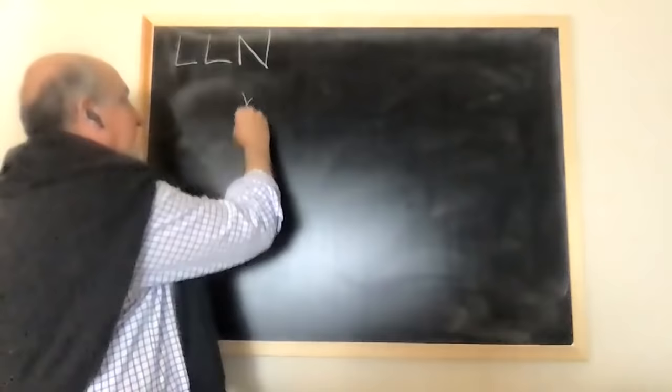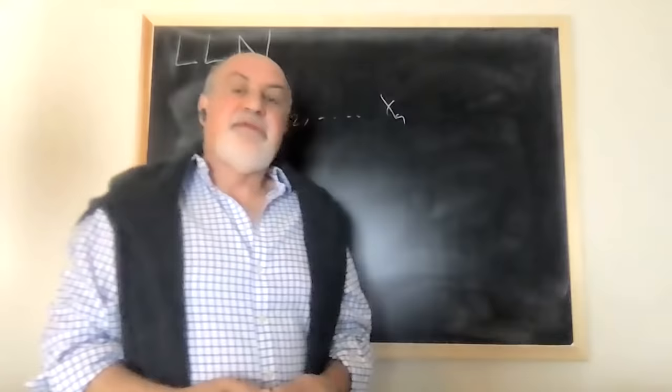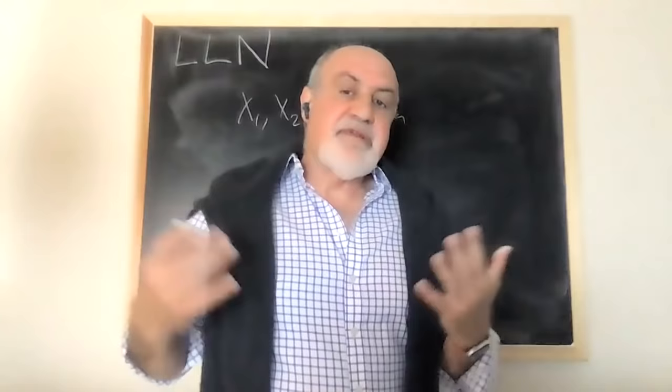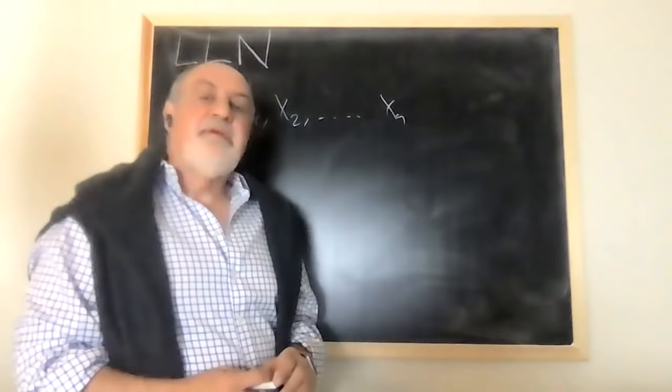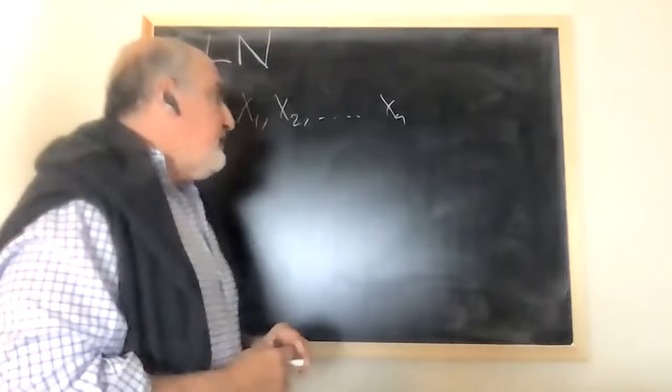So what is the law of large numbers? Very simple. It tells you that when you have observations x1, x2, and to simplify, let's assume that they come from the same distribution, they're distributed in the same way. Let's also say that they must be independent, but this is not quite necessary, by the way, the independence, they can be weakly dependent without affecting the result.